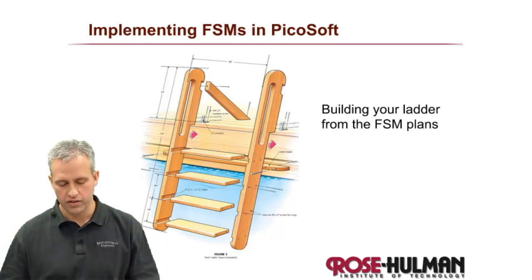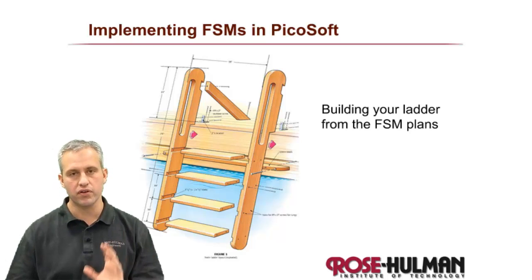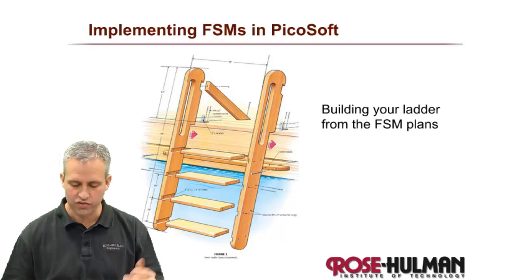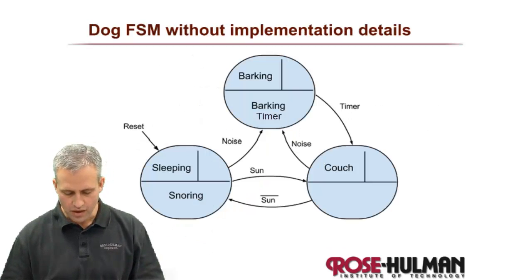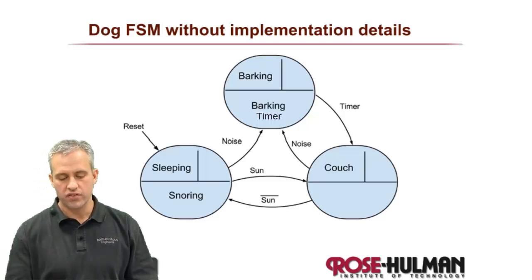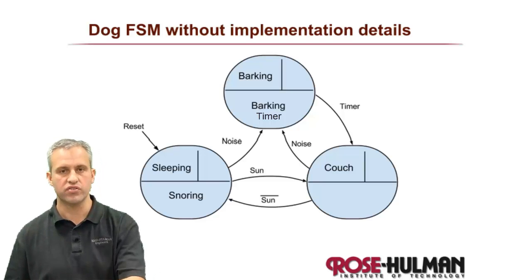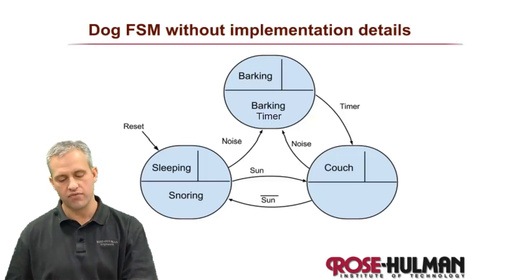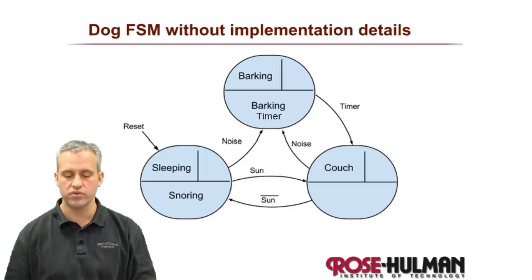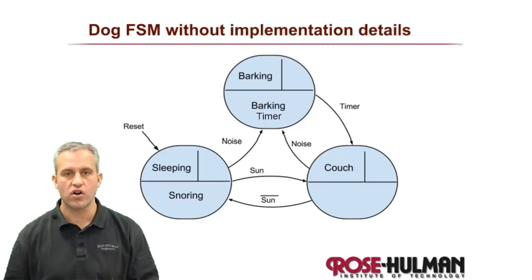Our goal here is to implement the finite state machine — kind of like building something up from the plans. Here I've got a plan for building ladder logic. We've got our dog finite state machine, but to be honest it's a little bit incomplete right now because it doesn't have state numbers, and none of the inputs or outputs have numbers on them.